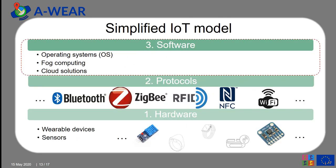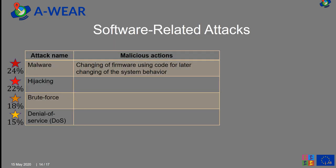The last layer in the IoT model is the software layer, which according to statistics is connected with the most widespread attacks. First of all, there is malware — the changing of firmware using code to later alter the system behavior. Secondly, hijacking. There are two types: in the man-in-the-middle type of hijacking attack, the attacker takes control of an established connection while it is in progress. In the other type, browser hijacking, the attacker redirects the user to a different site than the one requested.